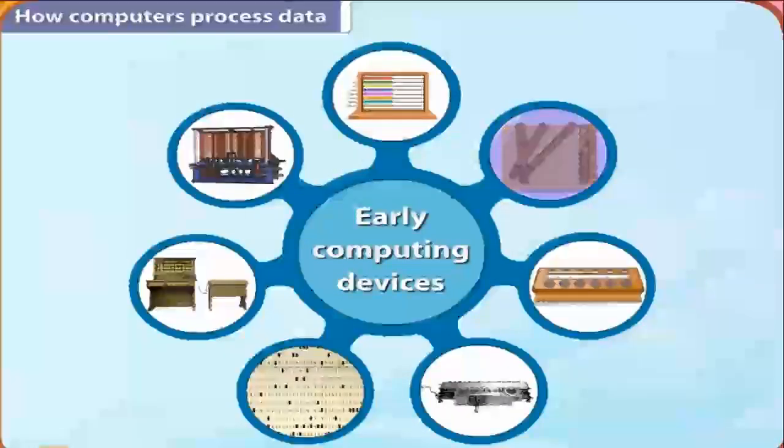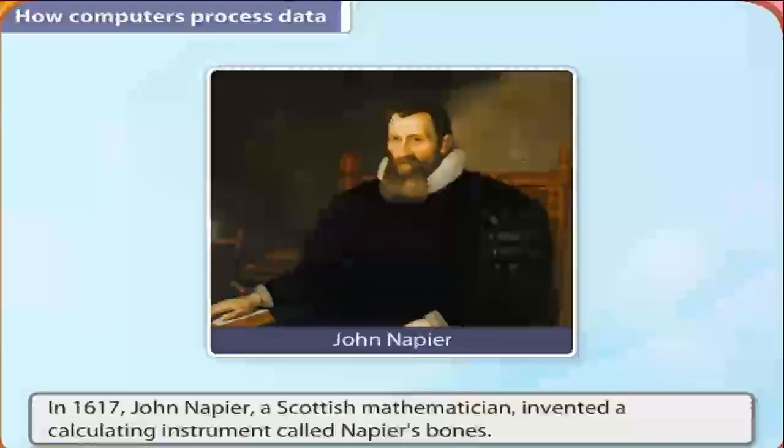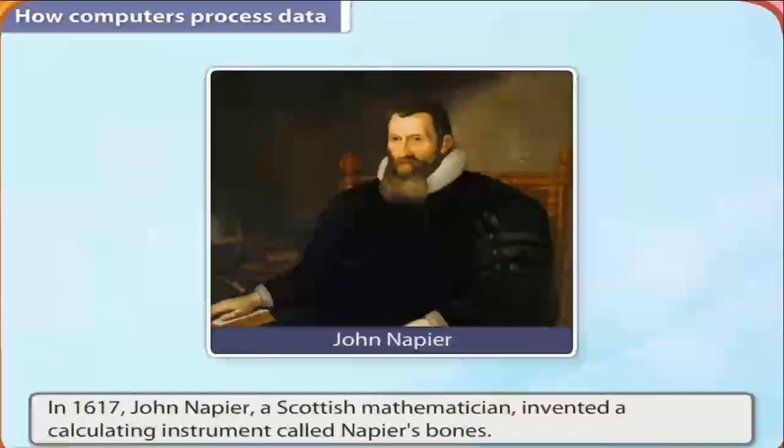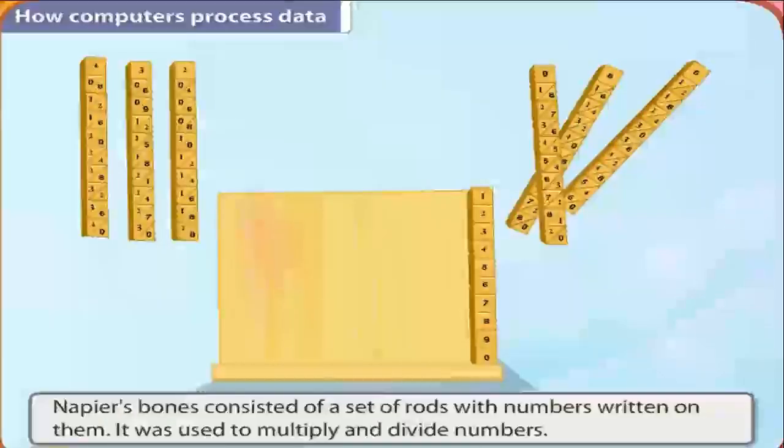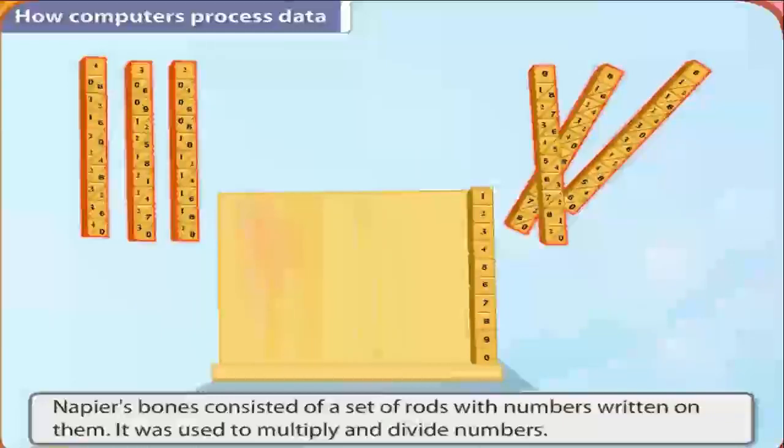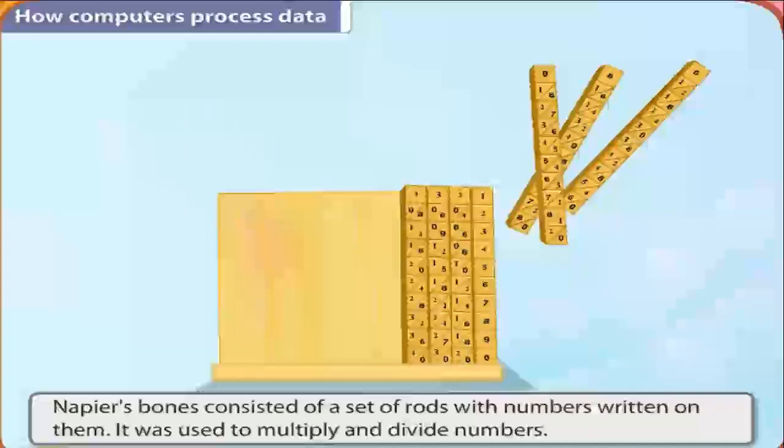Then in 1617, John Napier, a Scottish mathematician, invented a calculating instrument called Napier's bones. Napier's bones consisted of a set of rods with numbers written on them. It was used to multiply and divide numbers.